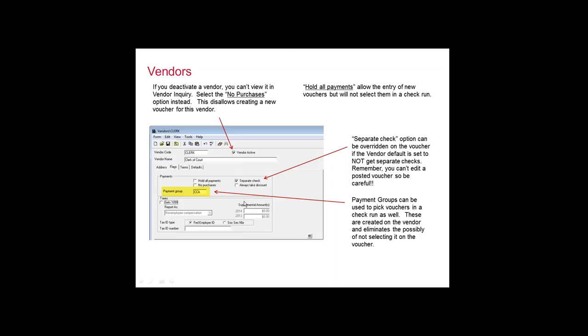The 'Hold All Payments' option allows entry of a new voucher but doesn't let you select it in check run. Let's say you're having a discrepancy with a vendor — you're still getting invoices and keeping track of them, but you don't want to pay any yet. You can put a check mark in 'Hold All Payments.' Then there's the 'Separate Check' option. If you want to pay a court reporter a separate check for every invoice, put a check mark in the separate check field on the vendor. You can override this setting on the payment voucher itself.